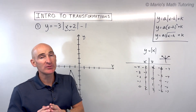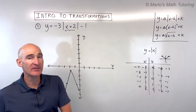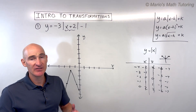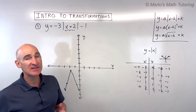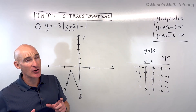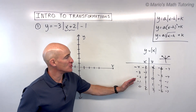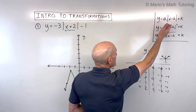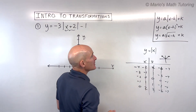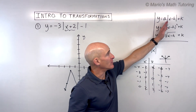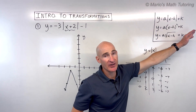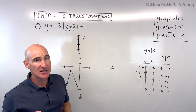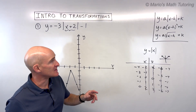That's one way to work with this — using the table. You need to know those basic points of the parent function. Usually it's good to pick a couple of negatives, zero, and a couple of positives, but it depends on the graph. So you want to know your parent functions and then apply the transformations. When it's in this simple form, you can really just think about working from left to right.